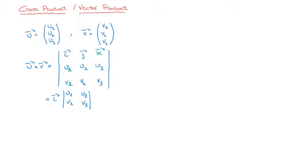We now move on to the second term, the second unit vector in the top row, which is J. In this case we subtract J, and J multiplies the determinant of the matrix we'd be left with if we removed all entries in the same row as J — so K and I — and all entries in the same column as J, so U2 and V2. That leaves a 2x2 matrix whose first column is U1, V1 and second column is U3, V3.